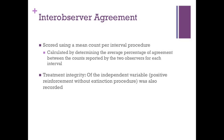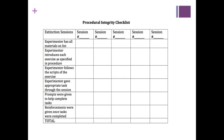Integrity was 100% throughout the study. Procedural integrity was assessed during 30% of sessions using the following checklist: the experimenter has all materials on the list, introduces each exercise as specified, follows the scripts of the exercise, gives appropriate tasks through the session, provides props to help complete tasks, and gives reinforcements once tasks are completed.